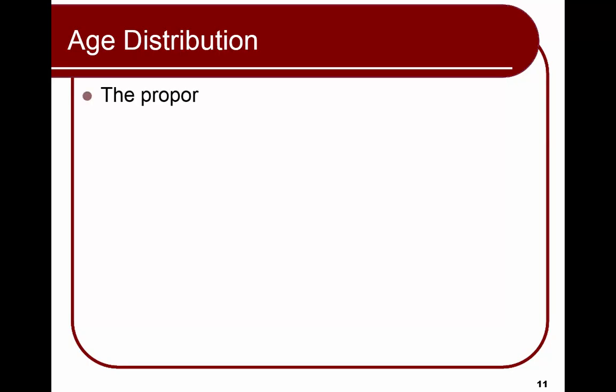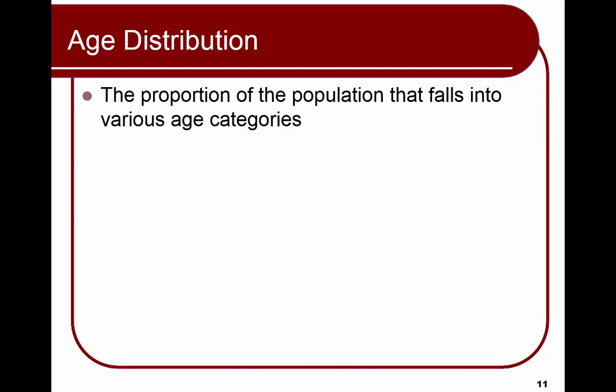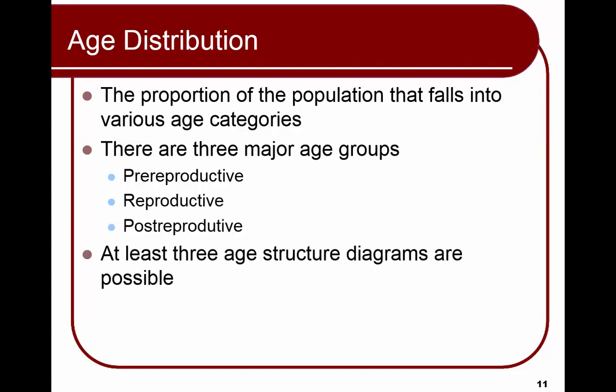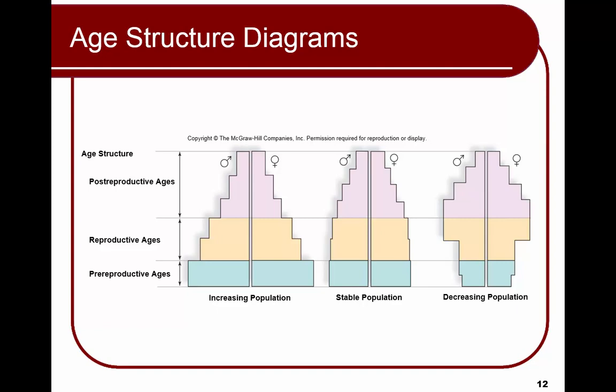We also look at age distribution — the portion of the population that falls into different age categories. We break it into three groups: pre-reproductive, reproductive, and post-reproductive. There are three possible age structure diagrams: increasing, stable, and decreasing. In an increasing population, there are more individuals at pre-reproductive age. In a stable population, the pre-reproductive and reproductive numbers are roughly equal. In a decreasing population, there are fewer pre-reproductive individuals, with numbers increasing slightly at reproductive and post-reproductive age before declining.